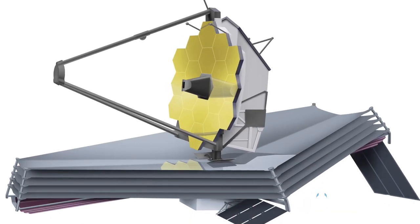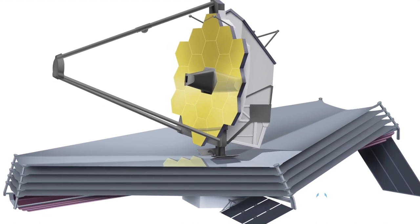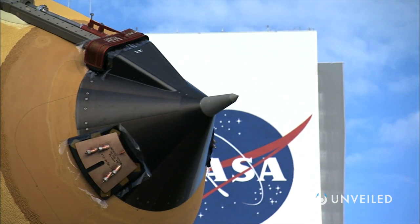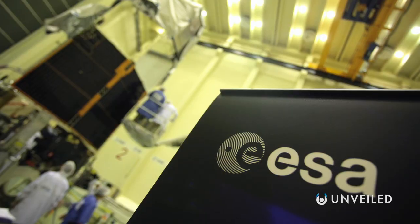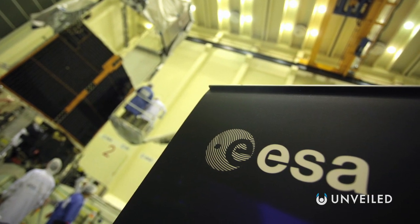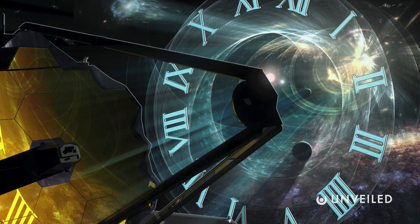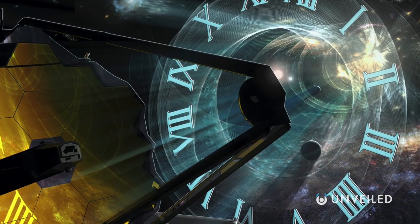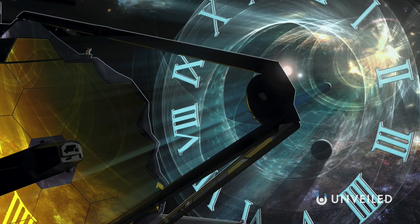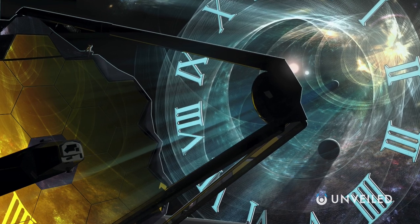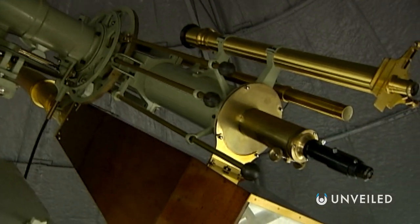The James Webb Space Telescope, also more simply known as the Webb or the JWST, is a joint initiative by NASA, ESA the European Space Agency, and the CSA the Canadian Space Agency. It's making headlines in 2021 as its launch date nears ever closer, but work on the Webb actually dates back to the mid-1990s, more than 25 years ago.